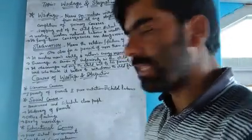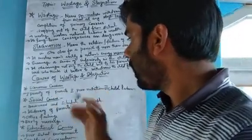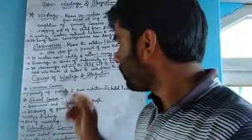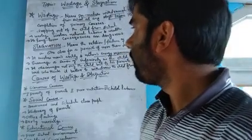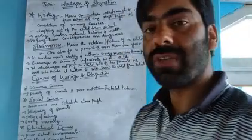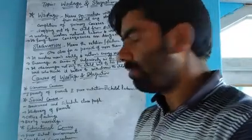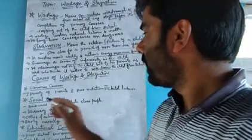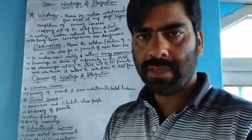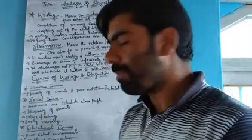Now let us see the causes of wastage and stagnation. First of all, there is the economic cause. The first economic cause is poverty of parents, which is a major reason for both wastage and stagnation.